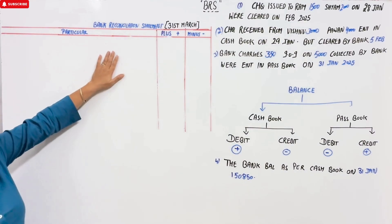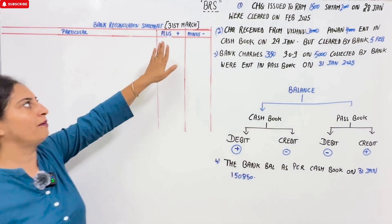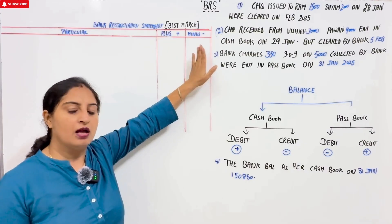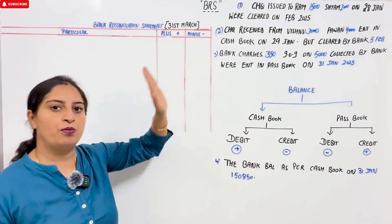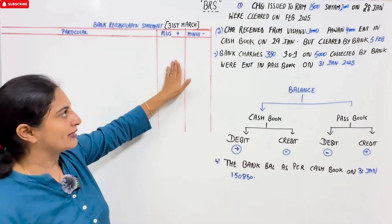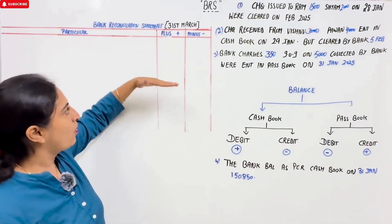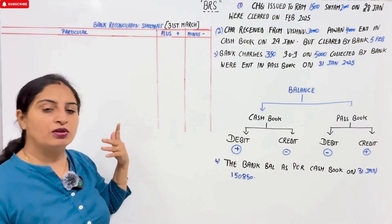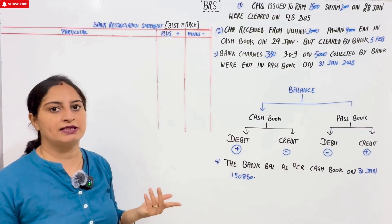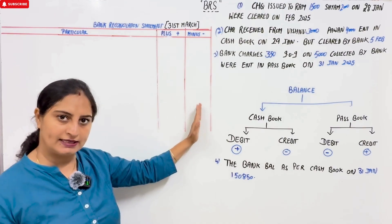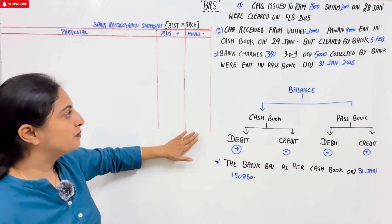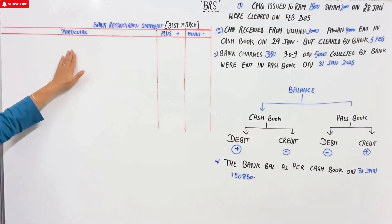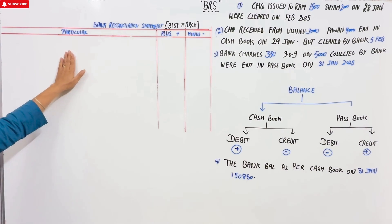First of all, we have to start the Bank Reconciliation Statement. We have to make two columns — one plus and one minus. You can do it with this method: in the book, the upper portion is plus and the lower portion is minus. Both methods are the same, but we have to use the easier method. First of all, we have to check which balance we start with.